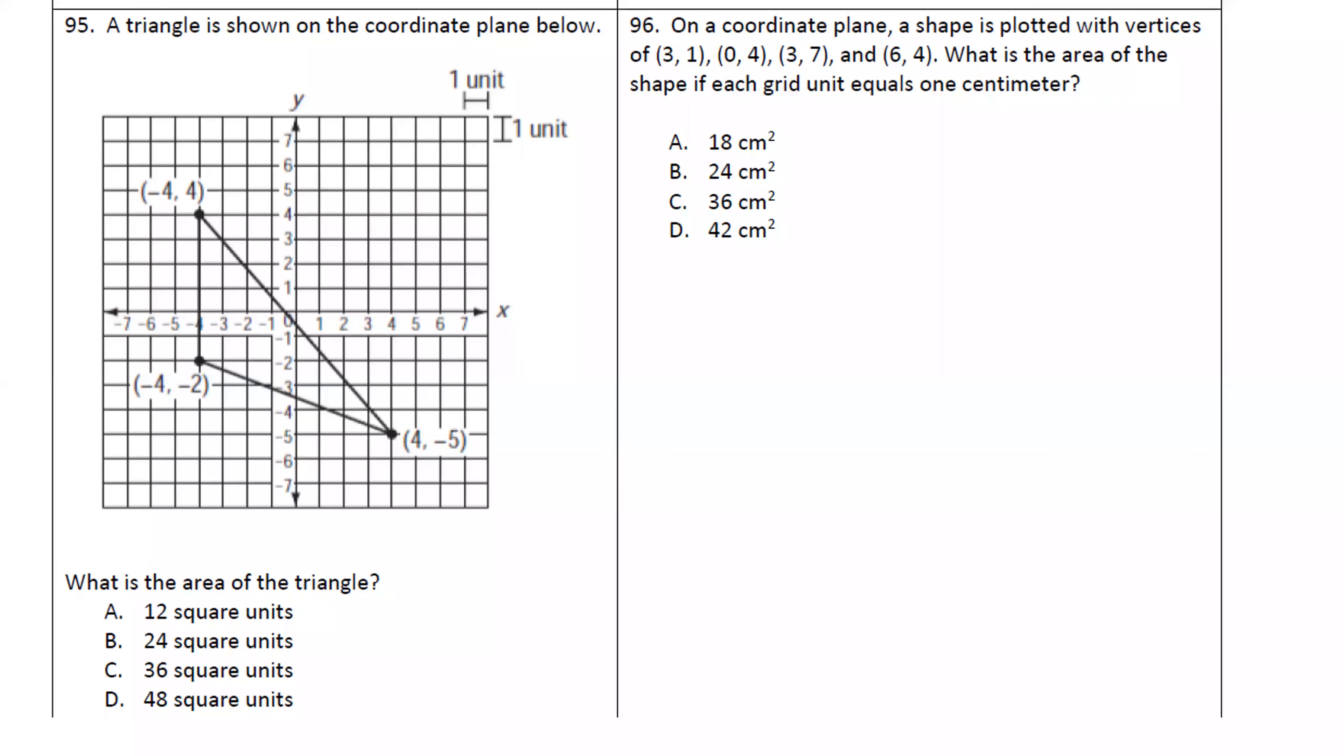Okay, here we go. Going through the last part of this, hopefully we can get it from 95 all the way to 108. Starting off with 95, we have a triangle. It's asking us to find area, so we have to use our formula for an area of a triangle. Our area formula for a triangle is one half base times height.